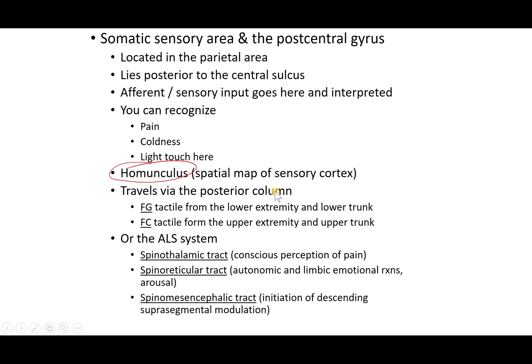Information travels afferently from body to brain via the posterior column — the fasciculus gracilis and fasciculus cuneatus — which carry tactile sensation, meaning non-pain, non-temperature sensory feeling. The fasciculus gracilis carries tactile input from the lower extremity and lower trunk, while the fasciculus cuneatus carries tactile input from the upper extremity and upper trunk. We'll draw a detailed map of this in a later lecture.